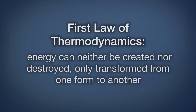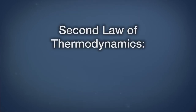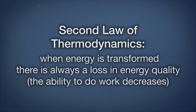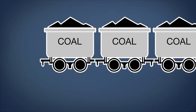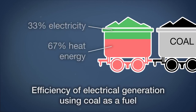The first law of thermodynamics tells us that energy cannot be created nor destroyed. It may change form from one to another, yet the overall amount of energy won't increase or decrease. However, the second law of thermodynamics tells us that any time you convert energy from one form to another — for example, from coal to electricity — there will always be a loss in the quality or usability of that energy. That is, if you have a hundred joules of energy contained in coal, you will never be able to convert it all to a hundred joules of electricity. Some energy will become less usable during the transfer. The first law tells us it won't go away — there are still a hundred joules of energy — but the second law tells us it will be less usable.